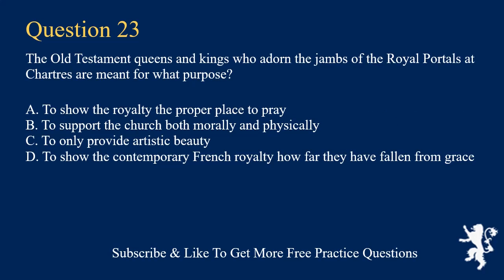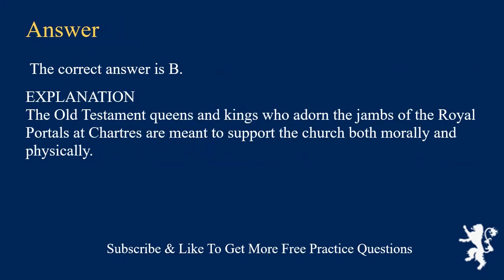The Old Testament queens and kings who adorn the jambs of the royal portals at Chartres are meant for what purpose? A. To show the royalty the proper place to pray. B. To support the church both morally and physically. C. To only provide artistic beauty. D. To show the contemporary French royalty how far they have fallen from grace. The correct answer is B.